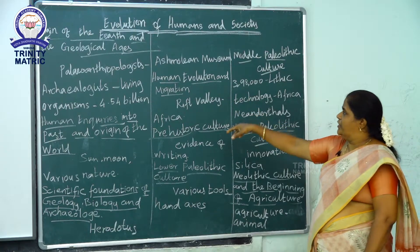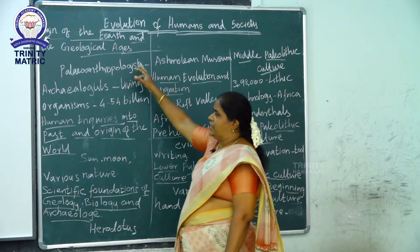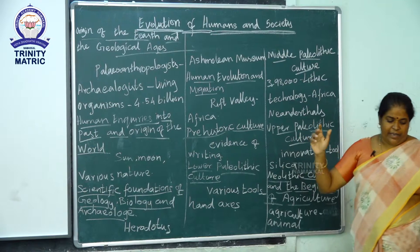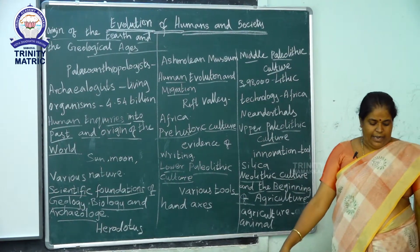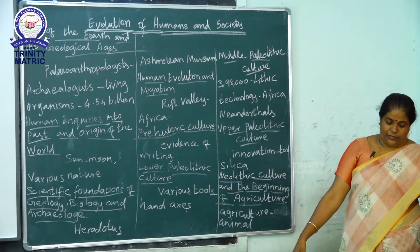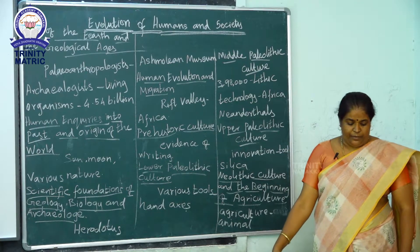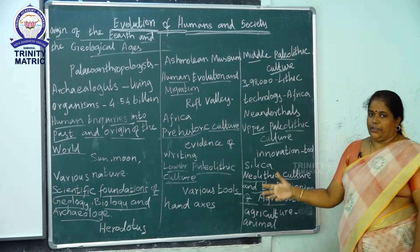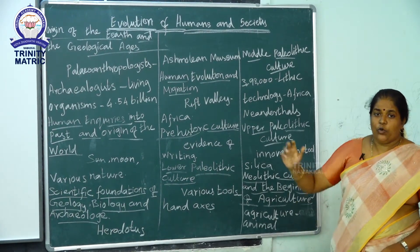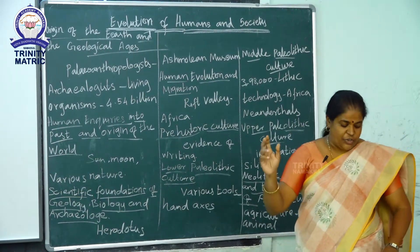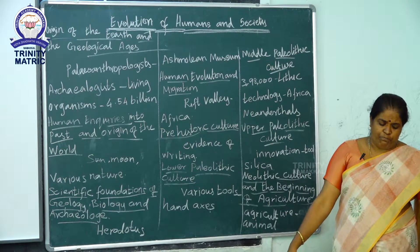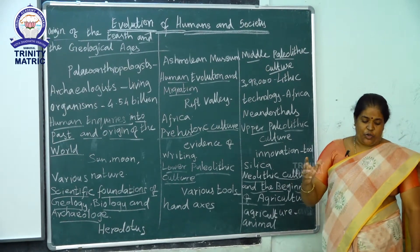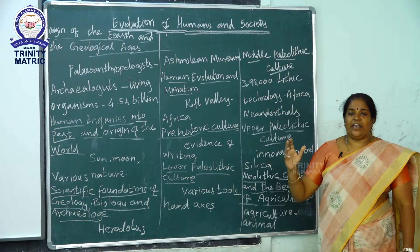The first subheading is Origin of the Earth and Geological Age. The history of humans is closely related to the history of the earth. They are important for the reconstruction of the history of the earth and various living organisms.